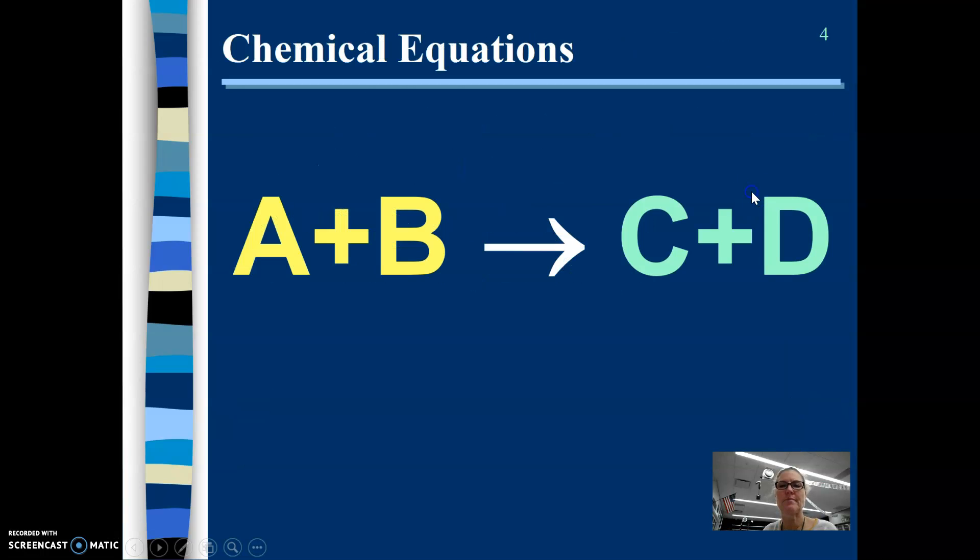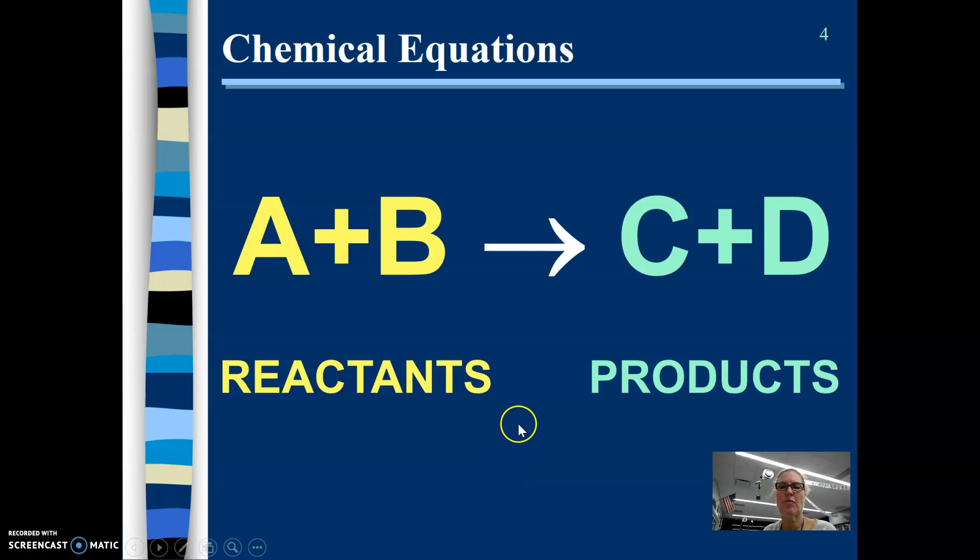And that is the way that we go about balancing chemical equations. So we count up the reactants and we count up all the products, and we make sure that those two sides have the same amount of particles.